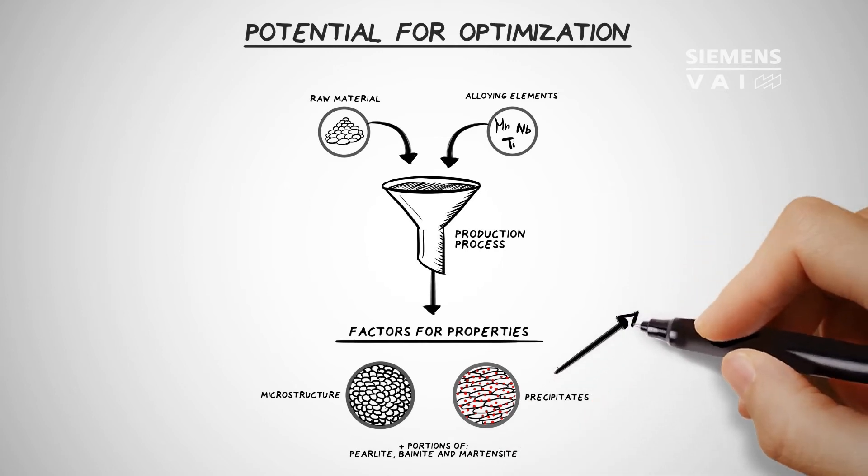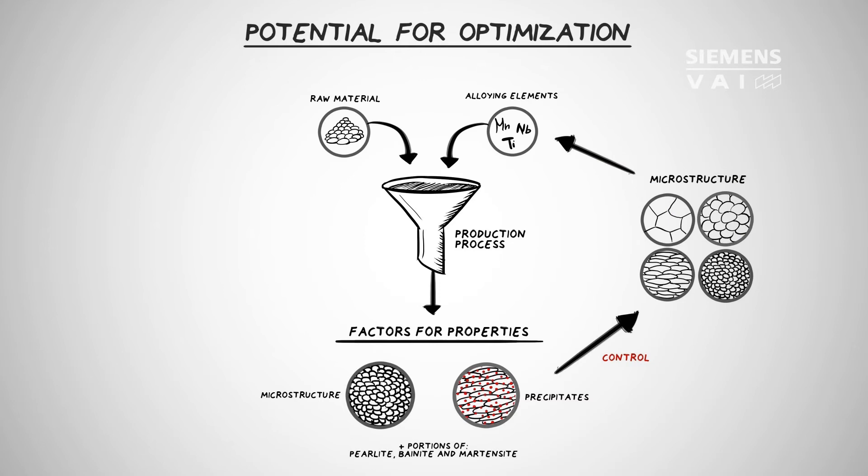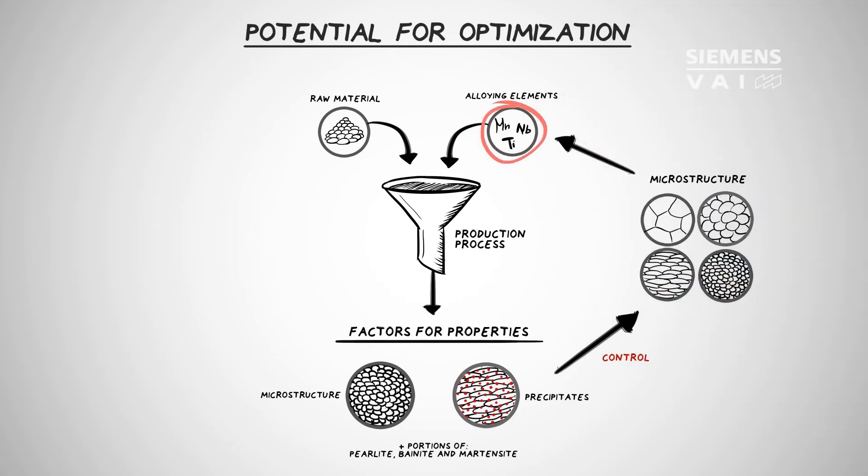Precipitates are needed to control microstructure evolution during rolling and for the precipitation hardening of the finished product. This requires a sufficient amount of alloying elements in the solution such as niobium prior to hot rolling.